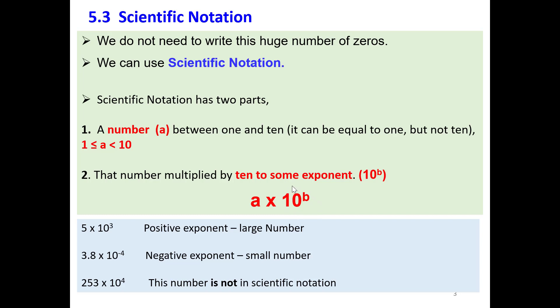Let's check the example 5 times 10 to the power of 3. Is this number in scientific notation? Yes, because 5 is between 1 and 10, and it's multiplied by a power of 10. The exponent is 3. Always, if the number is in scientific notation and the exponent is positive, this corresponds to a large number greater than 10.